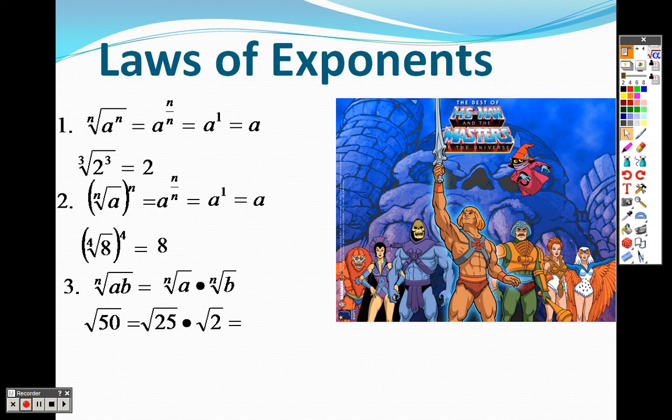If we wanted to, we could split up the square root of 50 into the square root of 25 and square root of 2. I chose 25 and 2 because 25 times 2 is 50. The square root of 25 is 5, so I could actually simplify that to 5 root 2.